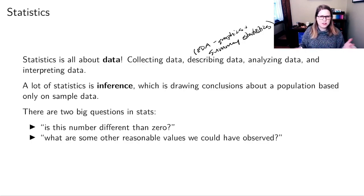A lot of statistics is about inference, where we're going to draw a conclusion about some large population based only on data from a small sample. And we have these two big questions in statistics that we're going to come back to again and again. One big question is, is this number different than zero? And the other one is, what are some other reasonable values we could have observed? Those might seem kind of boring and basic, but they can be applied in many, many situations.